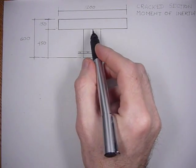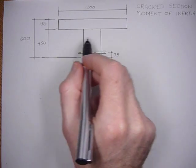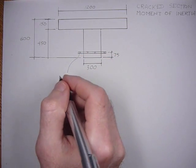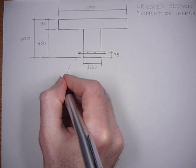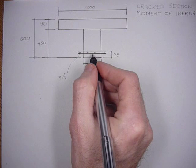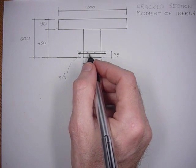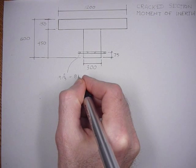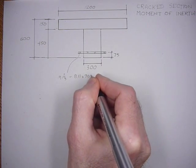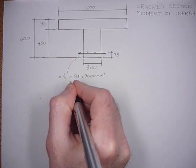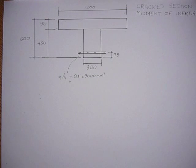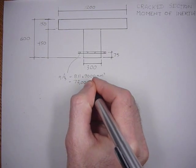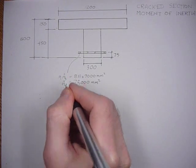Today we've got another T-section, and we're going to solve for the cracked section moment of inertia and neutral axis location. We'll make the transformed area of steel N times the area of steel, and let's make it 9,000 millimeters squared. So N is 8.11 times 9,000 millimeters squared, which gives us 73,000 millimeters squared — that's the transformed area of the steel.